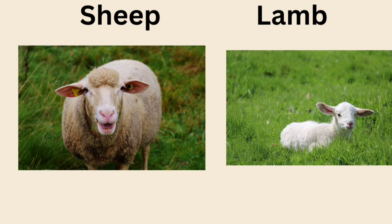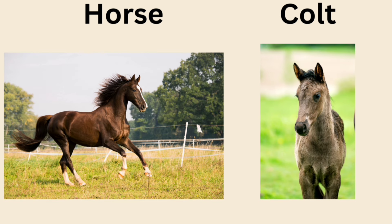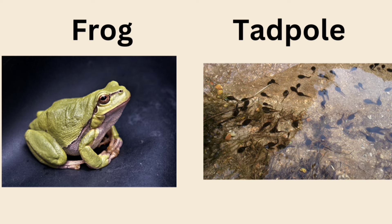Sheep — young one is lamb. Horse — young one is colt. Frog — young one is tadpole.